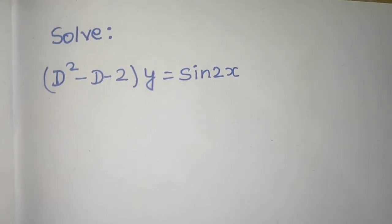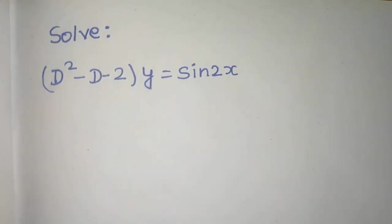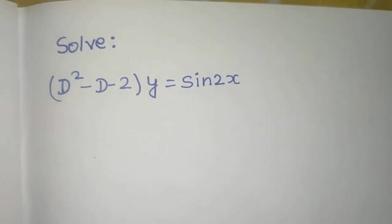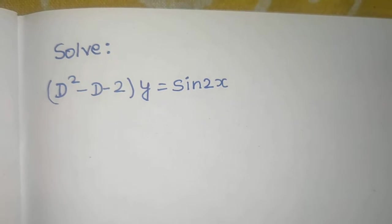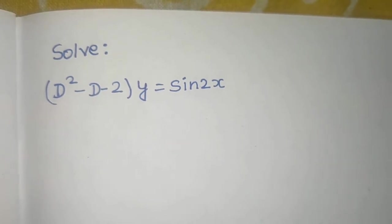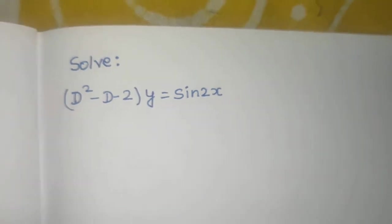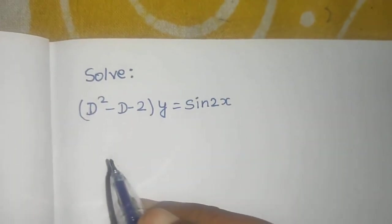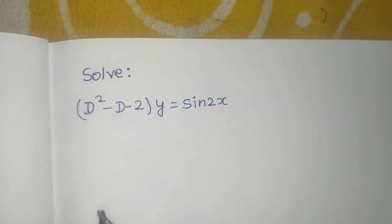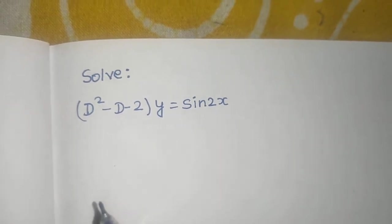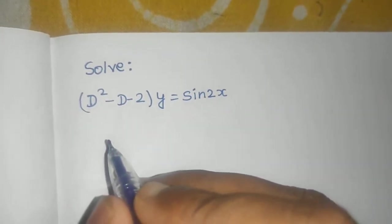Let's solve one more question from linear differential equations with constant coefficients. In this question we have (D² - D - 2)y = sin(2x). First we will find the complementary function, then we will find the particular integral, and our solution will be the sum of these two.